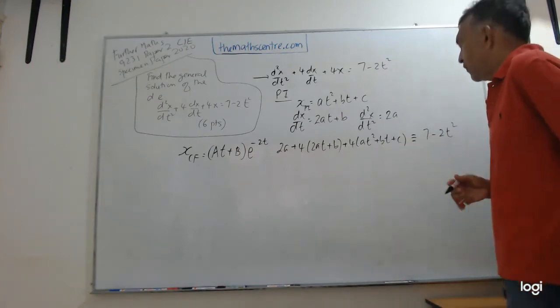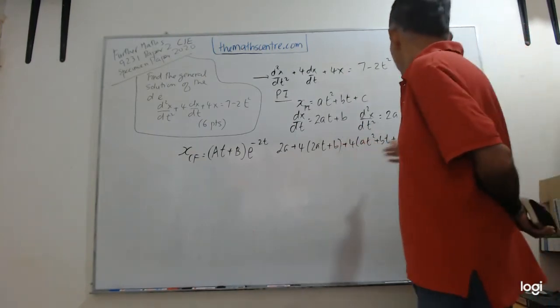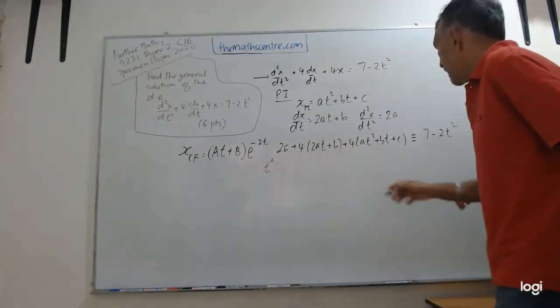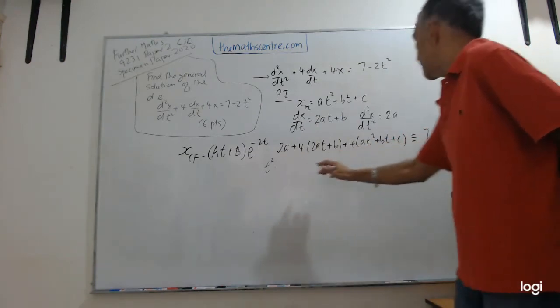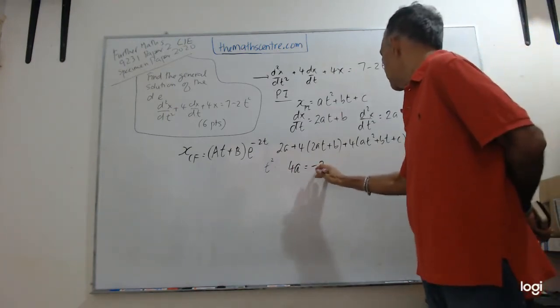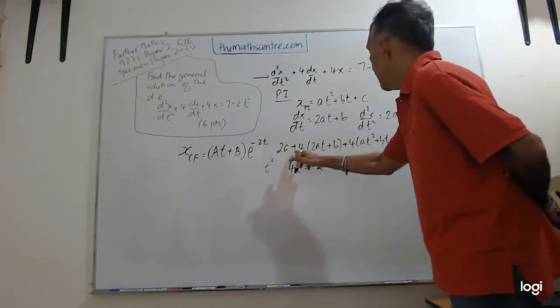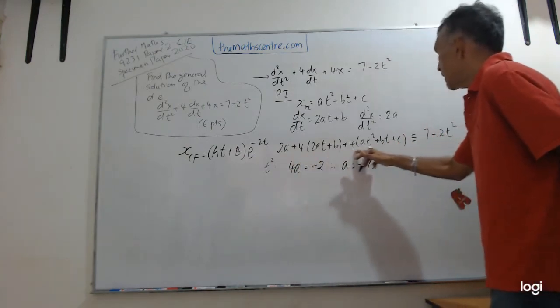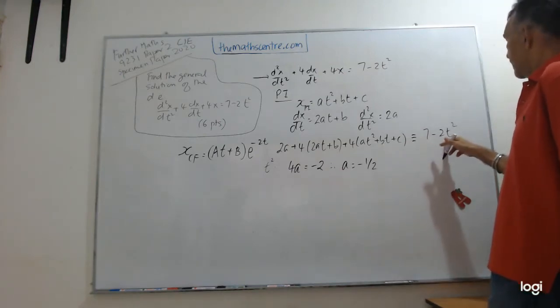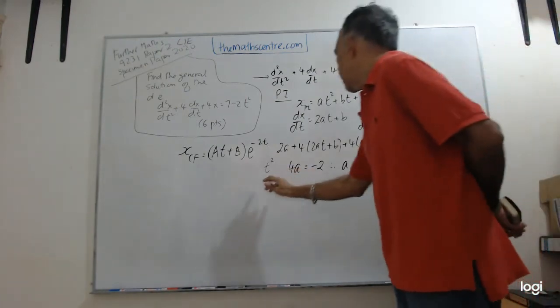Let's solve for a, b, and c. Let's look at the term in t². I have 4a here on the left-hand side, and that will equal -2. Therefore my a will equal -1/2. I'm looking at the coefficient of t². The coefficient is 4a, and t² on the right-hand side is just -2. Equating, I get a = -1/2.